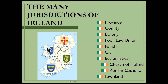Then we get to the many jurisdictions of Ireland. A lot of these nowadays no longer apply, but for historical purposes they do. You start out with the four provinces: Ulster, Connacht, Leinster, and Munster. Then you get down to the county level. Down from there, you're also going to get the barony, the poor law union, and the parishes — and there are two types of parishes: civil and ecclesiastical. Under the ecclesiastical, they will be further divided into the Anglican Church or Church of Ireland and the Roman Catholic Church. Then the smallest unit of measure will be the townland.